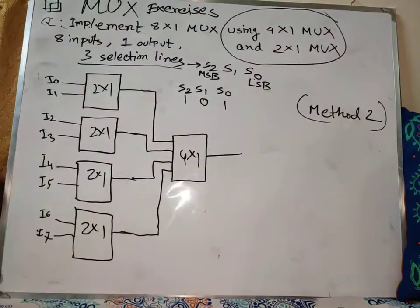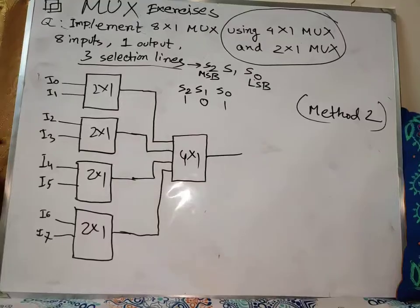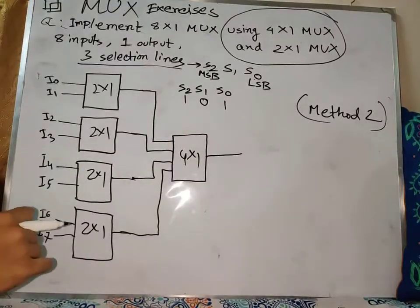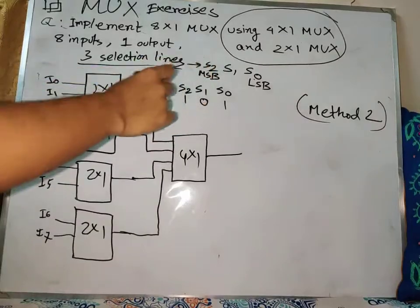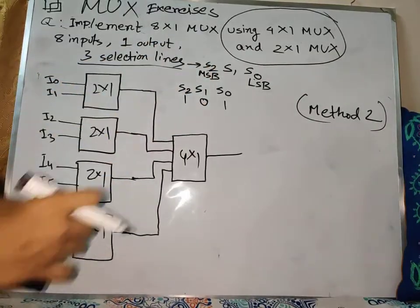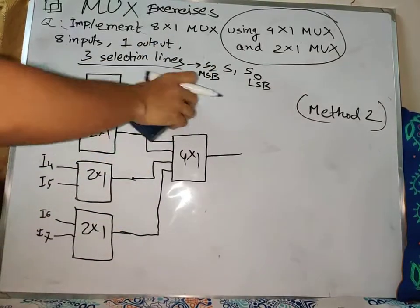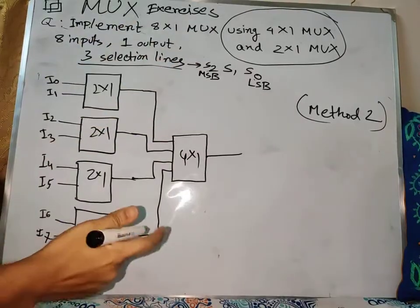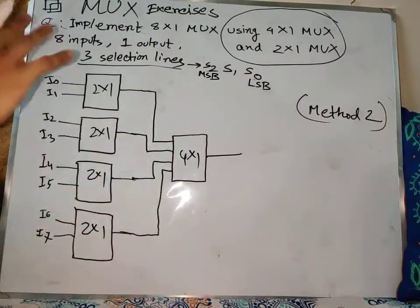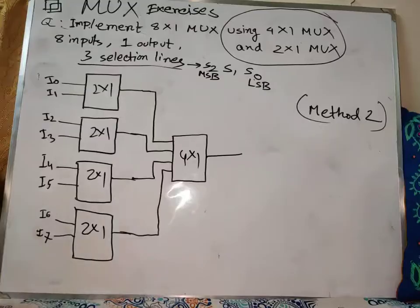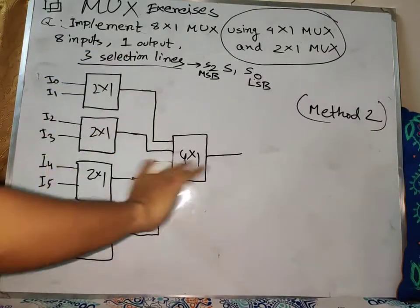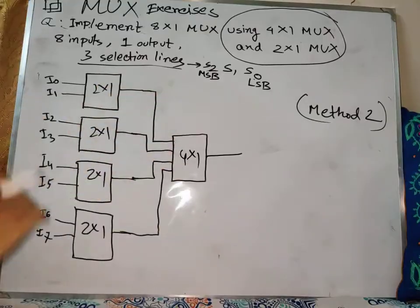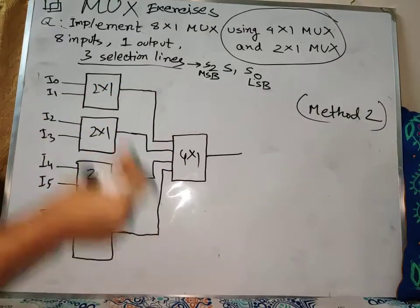So in Method 2, you can see the value we will find in the selector. Check the value and you can see the selector as well. As usual, our MSB is S2 — we need to look at the selector. The right side of the box is the 4x1 box.